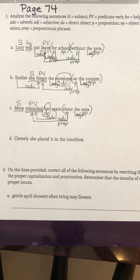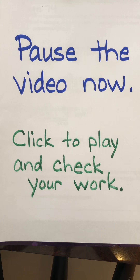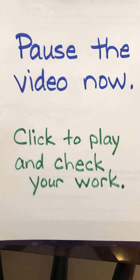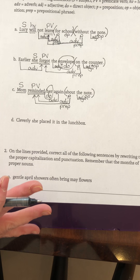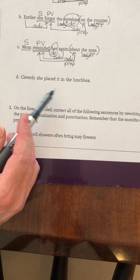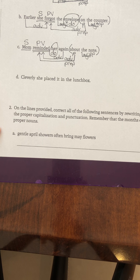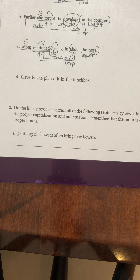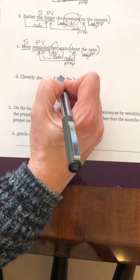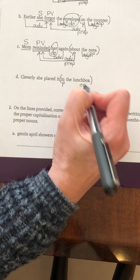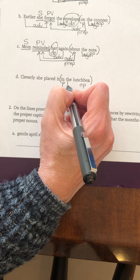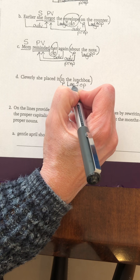Move now to letter D. Do that one by yourself and click back on to check your work. Welcome back. Letter D: cleverly she placed it in the lunchbox. Order of analysis is phrases, clauses, principal elements, and modifiers. Are there any prepositional phrases in this sentence? Yes ma'am. In the lunchbox is a prepositional phrase. In — preposition. In what? Lunchbox — object of the preposition. Which lunchbox? The — adjective because it modifies the noun.